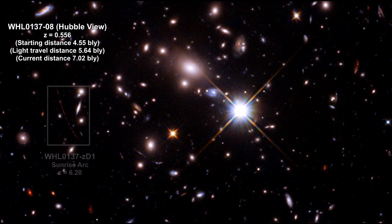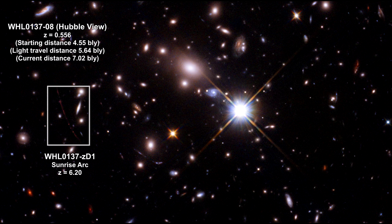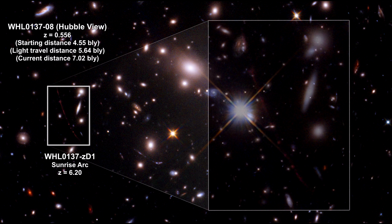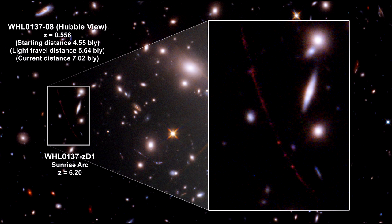In this cluster, Hubble discovered a gravitationally lensed galaxy, nicknamed the Sunrise Arc. Its redshift is 6.2, with an angular size on the sky exceeding 15 arc seconds. At that distance, this makes it 410,000 light years long.